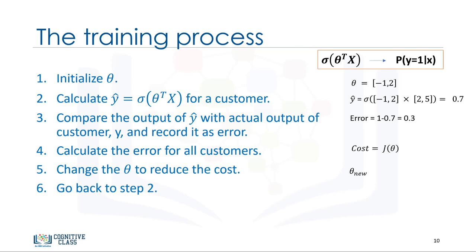This brings up two questions. First, how can we change the values of theta so that the cost is reduced across iterations? And second, when should we stop the iterations? There are different ways to change the values of theta, but one of the most popular ways is gradient descent. There are also various ways to stop iterations, but essentially you stop training by calculating the accuracy of your model and stop when it's satisfactory.